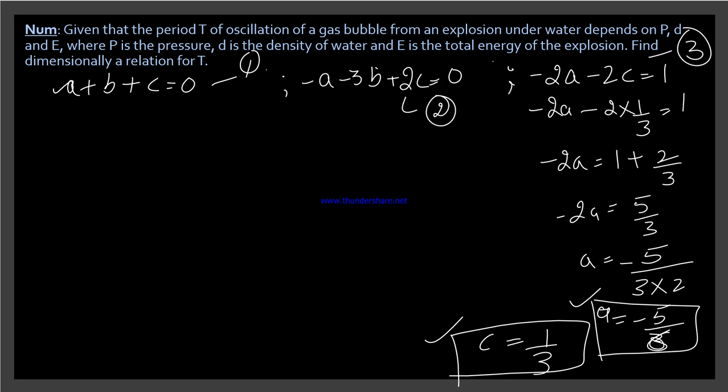Now it came. Now put a and c's answer in the first equation, so b's answer will be minus a minus c. Take this to the other side. Our a's value was minus 5 over 6. Then c's answer was 1 over 3. Minus minus, minus cancels out.